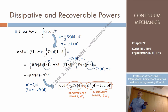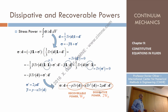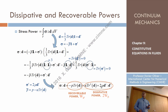So sigma double-dot D can be expressed as: on one side, the product of the thermodynamic pressure times the trace of D, plus a term K times trace-squared of D plus 2μ D-prime double-dot D-prime. When we talked about stress power in elasticity, we obtained an expression looking like this, with the only difference that instead of D we had strains, and K and μ were the bulk modulus and shear modulus. Here they are the bulk viscosity and shear viscosity.